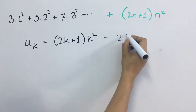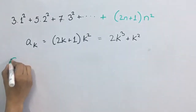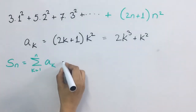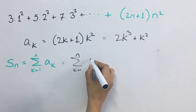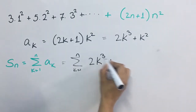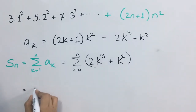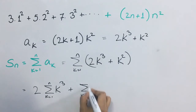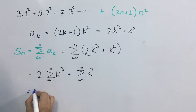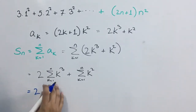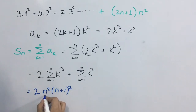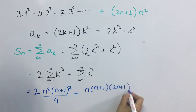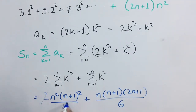Yeh general term hoga in terms of k. Isko simplify karne par we will get 2k cube plus k square. S_n will be equal to summation k equals 1 to n of a_k, and this is equal to summation k 1 to n of 2k cube plus k square. This is equal to 2 bahar aajayega: summation of k cube, plus summation of k square. This will be 2 times of the cube of first n natural numbers. Iski value hogi: n square into n plus 1 whole square upon 4. And this is equal to n into n plus 1 into 2n plus 1 upon 6. This will be cancelled by 2.